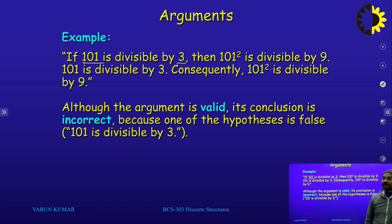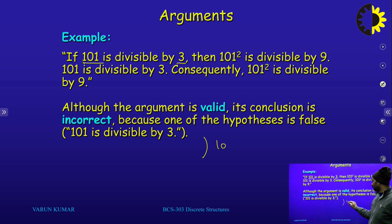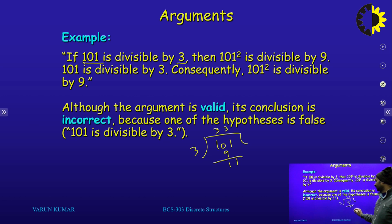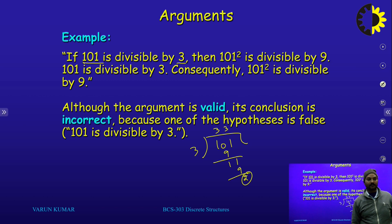If we divide 101 by 3: 3 times 33 becomes 99, remainder is 2. So 101 is not divisible by 3. My first proposition is incorrect, so my conclusion is incorrect.